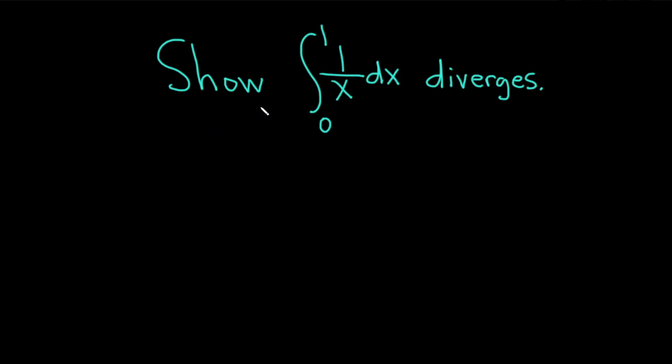In this video, we're going to show that the integral from 0 to 1 of 1 over x with respect to x diverges. Note that this is an improper integral, because it has what's called an infinite discontinuity at 0, and 0 is one of the limits of integration.